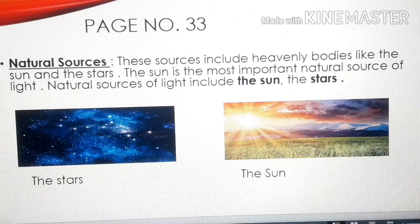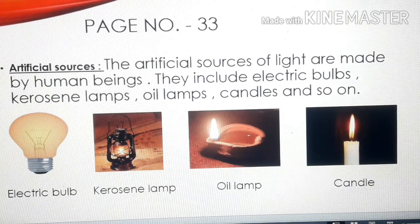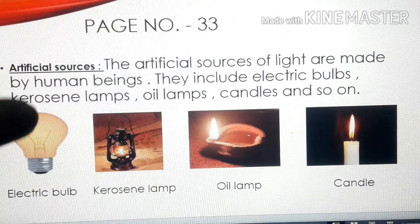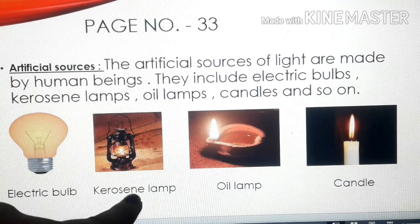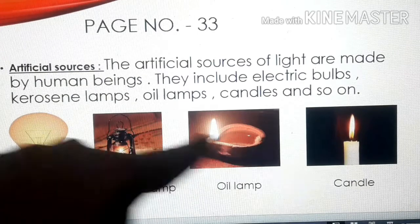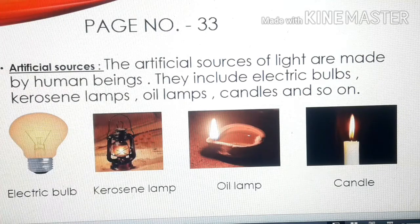Now we move to artificial sources. Artificial sources of light are made by human beings. These include the electric bulb, kerosene lamp, oil lamp, and candle — these are artificial sources of light made by human beings.